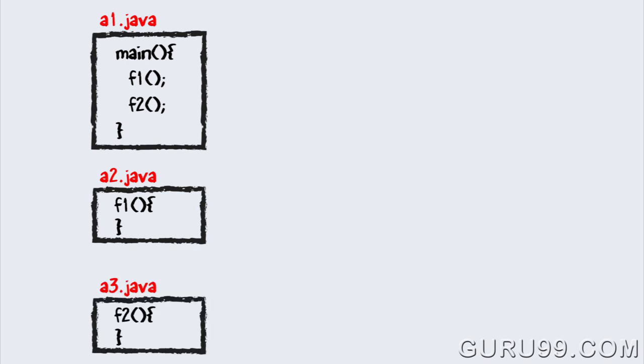Main method is stored in file A1.Java. F1 is stored in file A2.Java. F2 is stored in file A3.Java.